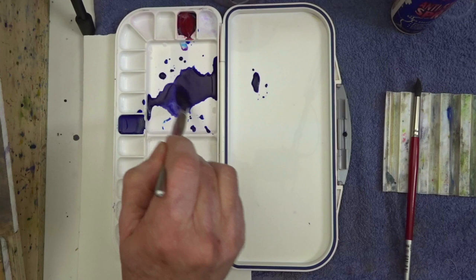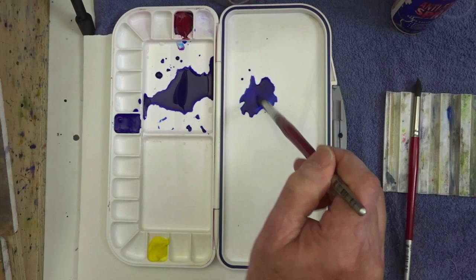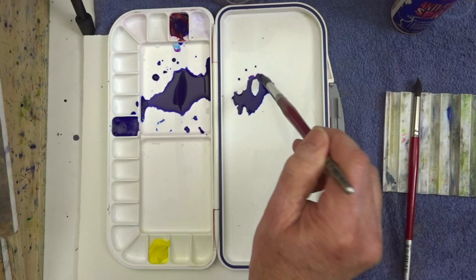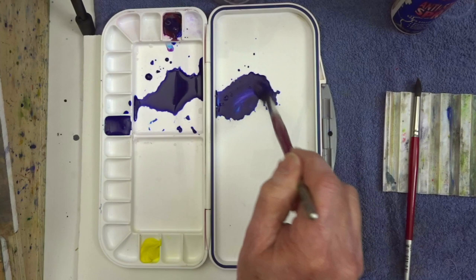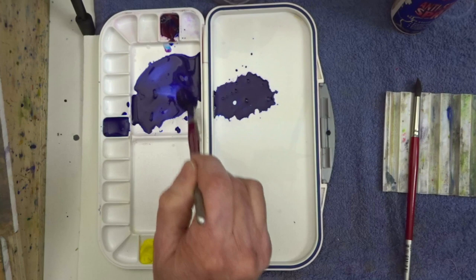For instance, if I pick up some of this mixture, put it in this part of the palette and now without adding any more water, just adding more paint, you can see that it starts to flow much less than what it did over here. And this will allow me to create different marks when I'm painting.